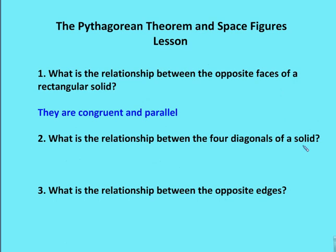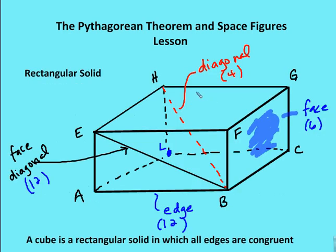What is the relationship between the four diagonals of a solid? The four diagonals — HB, AG, EC, and EF — are not going to be parallel, but they are going to be congruent.